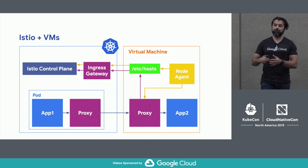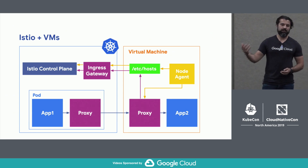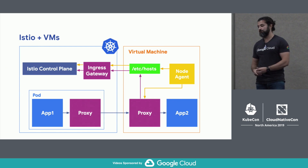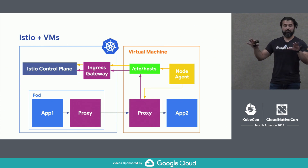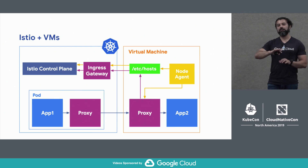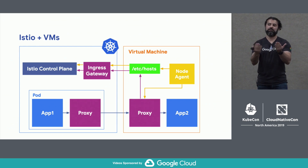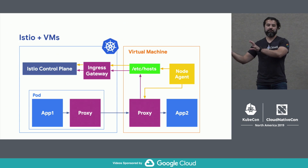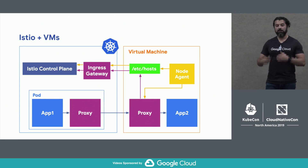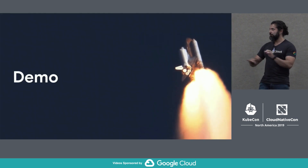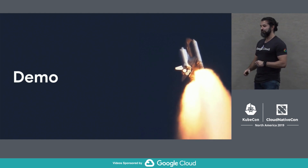So now this looks a lot like the picture Megan showed earlier, with two services running inside Kubernetes with proxies fronting both. We've bootstrapped the VM with the exact same setup, made sure the networking works, and from Istio's perspective it doesn't matter where that process is running. I'll hand it back to Megan for the demos.